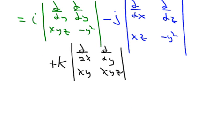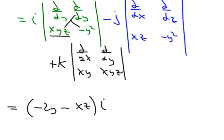Now we're ready to evaluate. For the first component, we take the partial with respect to y of negative y², which gives negative 2y, and subtract the partial with respect to z of xyz, which is just xz. This whole thing is multiplied by i. For the j component, minus the next piece: partial with respect to x of negative y² is zero, minus the partial of xz with respect to z, which is just x. So this is times j.